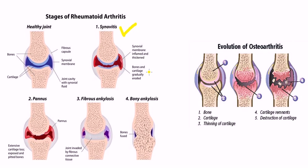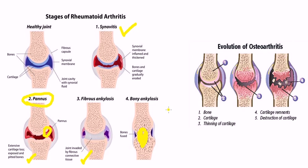In subsequent stages of rheumatoid arthritis, bone and cartilage are gradually eroded with pannus formation — this is high-yield. There is extensive cartilage loss with exposed and pitted bone. This progresses to fibrous ankylosis, where fibrous connective tissue invades the joint, and finally bony ankylosis, where the bones become fused.